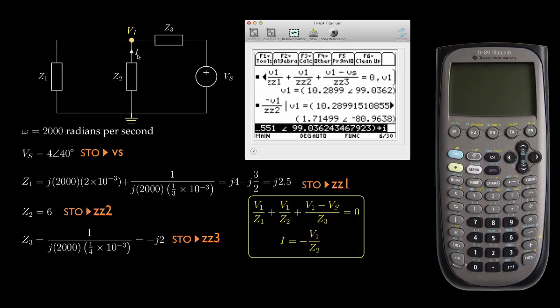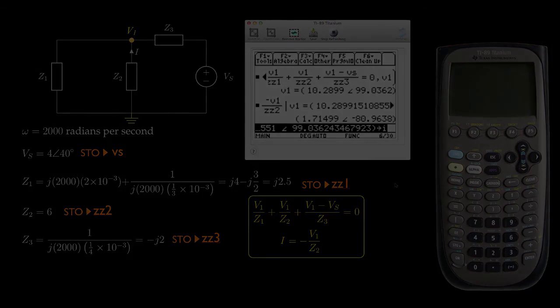So this current I flowing in that direction has an amplitude of 1.715 amps and a phase of negative 80.96 degrees. And that is an example of how we can use the TI-89 to solve this system of equations to solve for V1 and then determine I. Of course, you can use any tool to carry out this math, but this is a very popular tool among students studying circuits. So I thought it would be good to go through the way we use this tool for this particular circuit. So thank you.